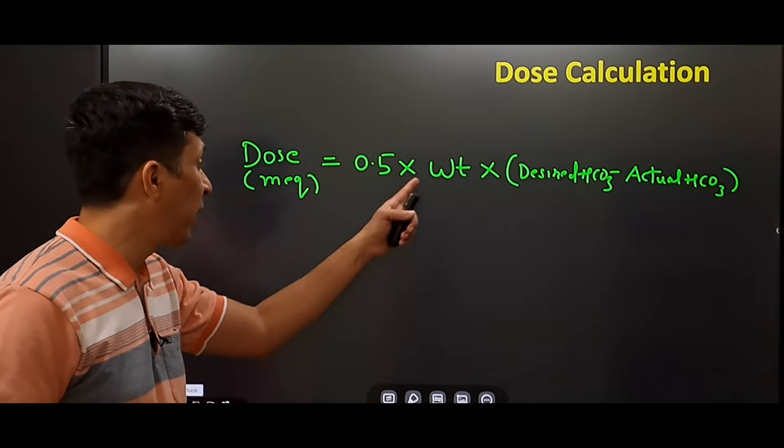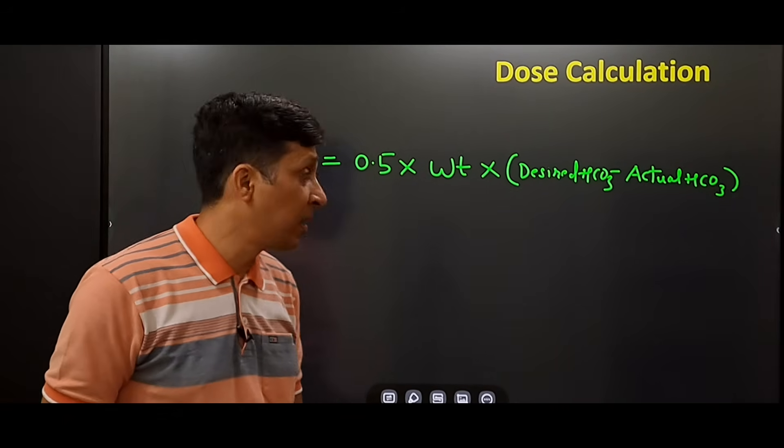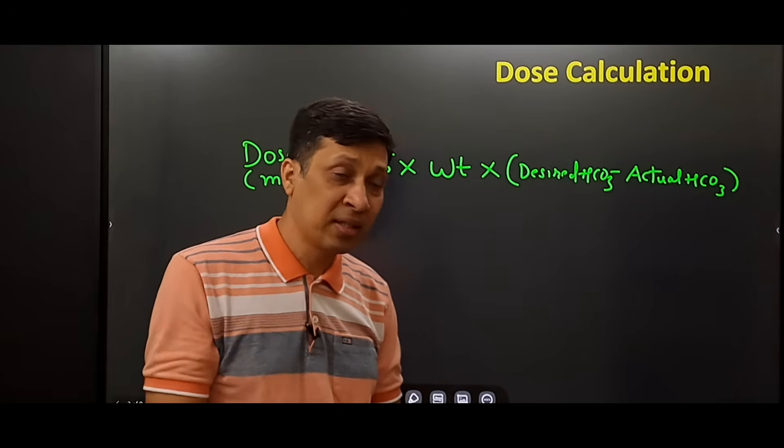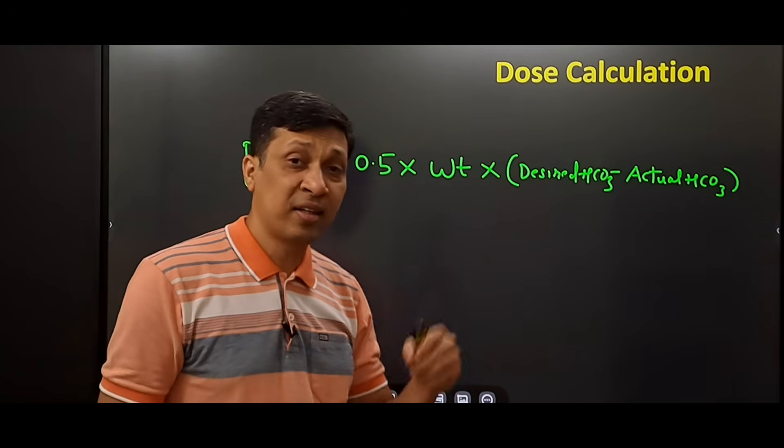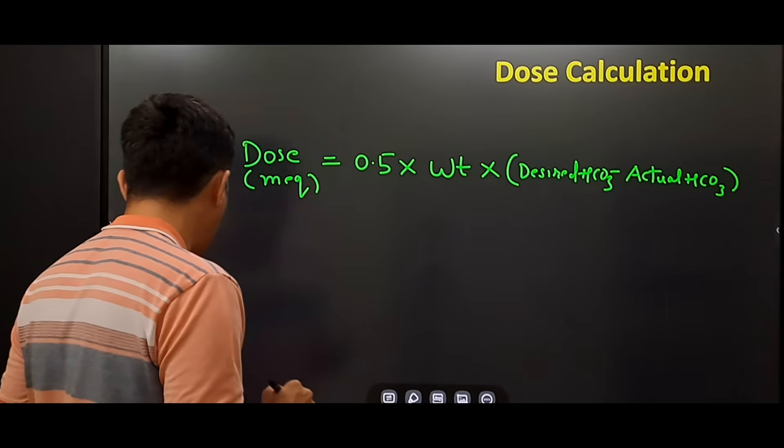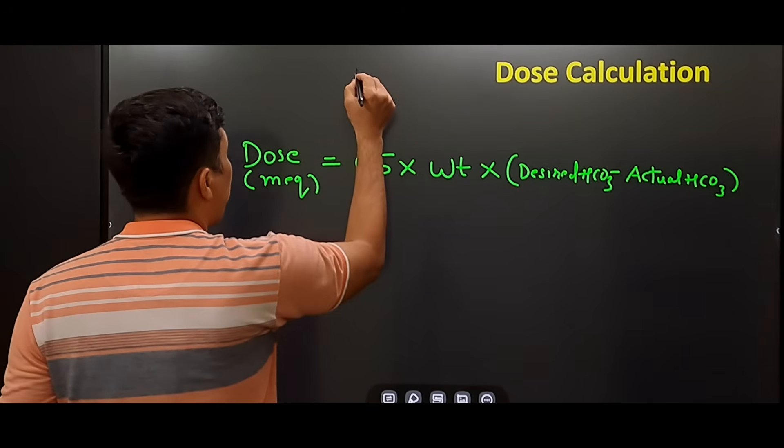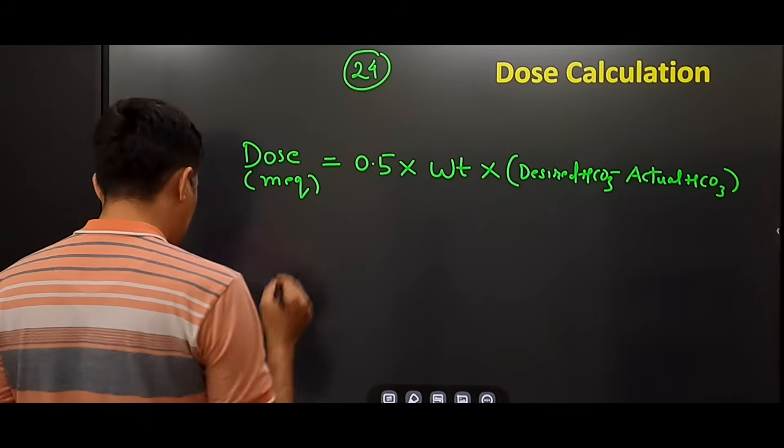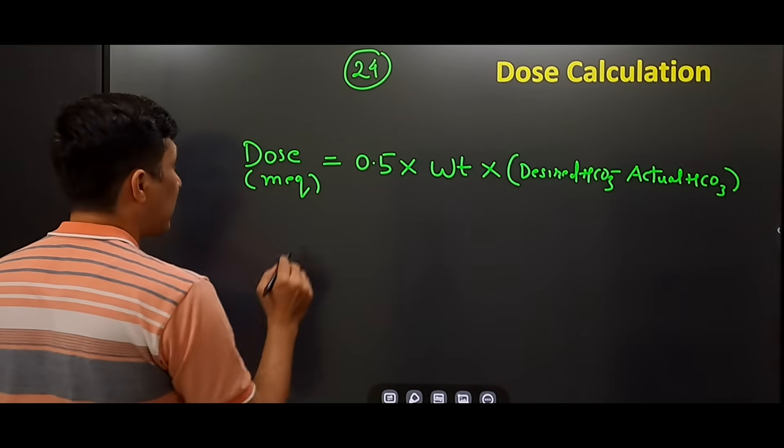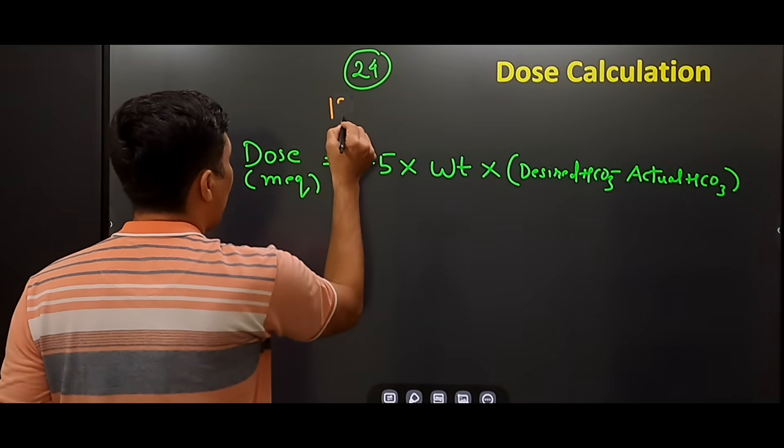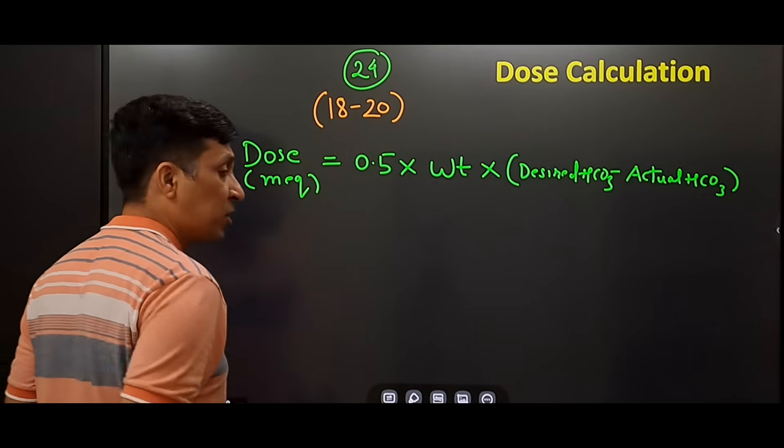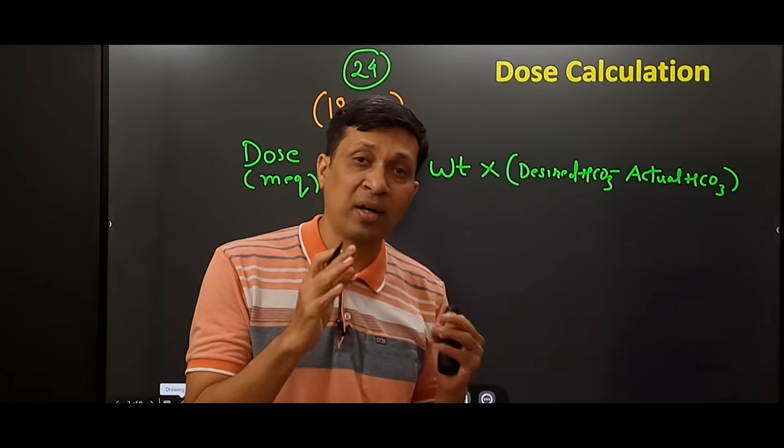In this formula, the weight of the patient can be calculated. Actual bicarb is the bicarb that we get from the ABG. But the question is, what is the desired bicarb? The normal level of bicarb is 24, but clinically we do not aim for this level and we aim for 18 to 20. We do this to prevent over correction.